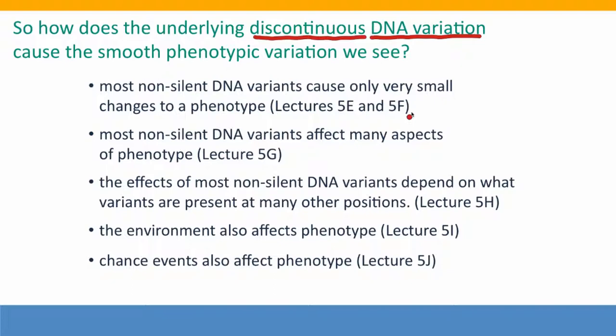The explanations will be discussed in the upcoming lectures. First, most DNA variants that aren't silent — that change phenotype at all — cause only very small changes to a phenotype. In addition, most of these affect many aspects of different phenotypes, and they also depend very much on what variants are present at many other positions. This is an example of the kind of interaction effects discussed in Module 4. The environment also affects phenotype, and chance events play important roles in phenotype as well.